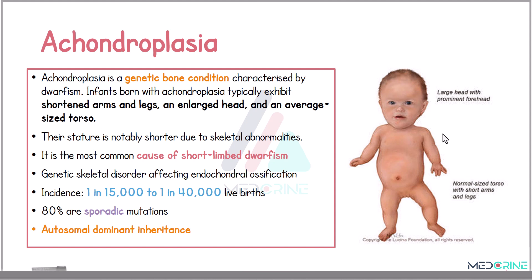Achondroplasia is a genetic skeletal disorder that affects the endochondral ossification process and has an incidence of about 1 in 15,000 to 40,000 live births. It is quite a rare condition with a sporadic mutation and an autosomal dominant inheritance.